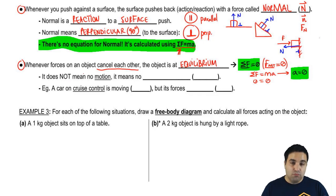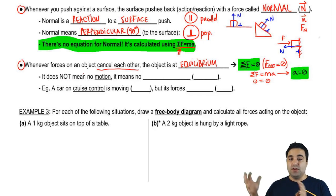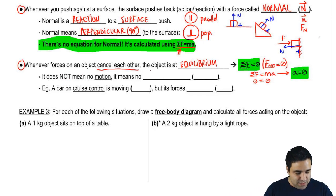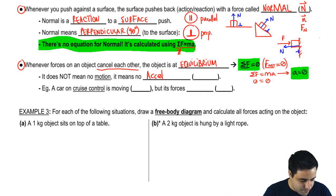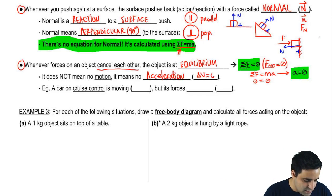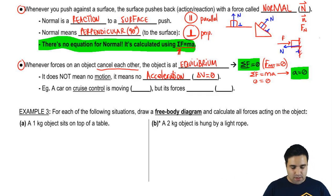Equilibrium does not mean no motion — it doesn't mean you're stopped. It means no acceleration — your change in velocity is zero.